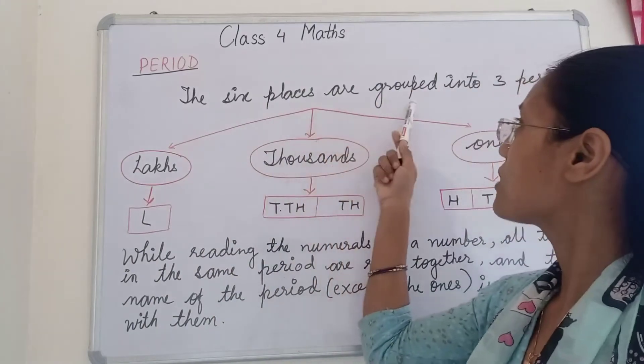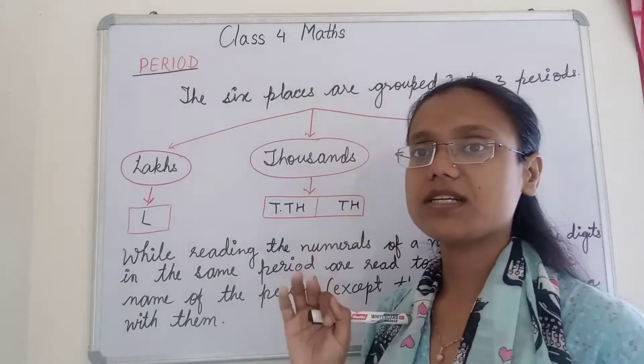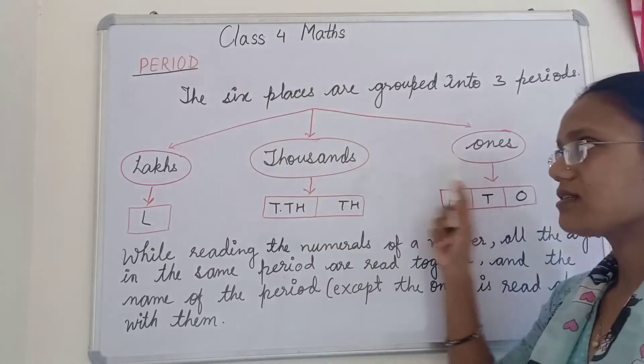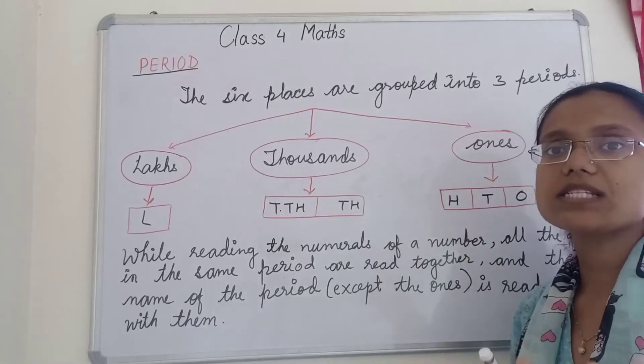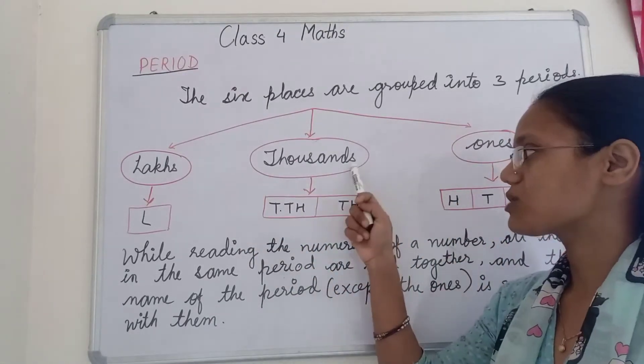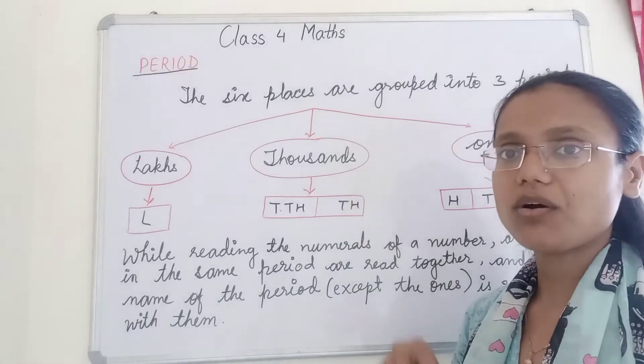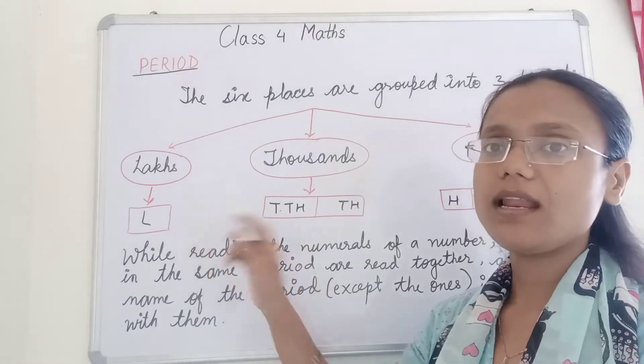The six places are grouped into three periods. What are they? Ones, thousands and lakh. Ones has three categories: ones, tens and hundred. In thousand there are two categories: thousand and ten thousand. Lakh will come.